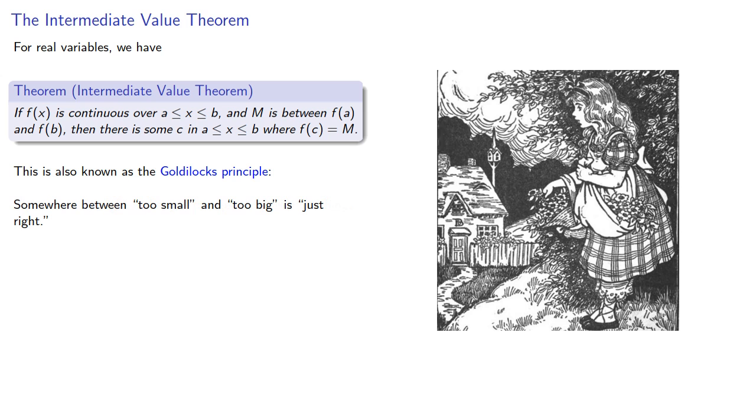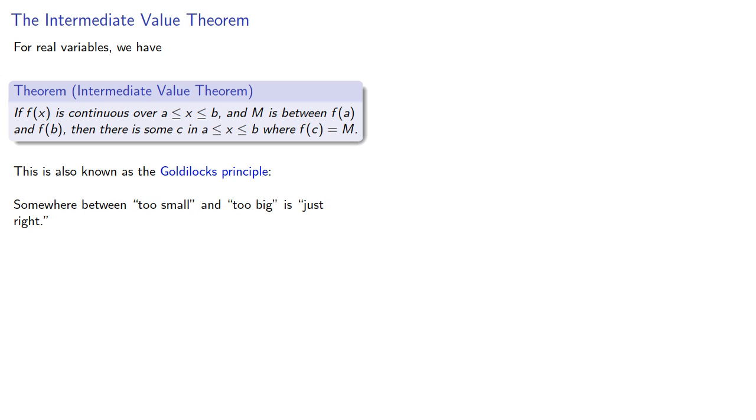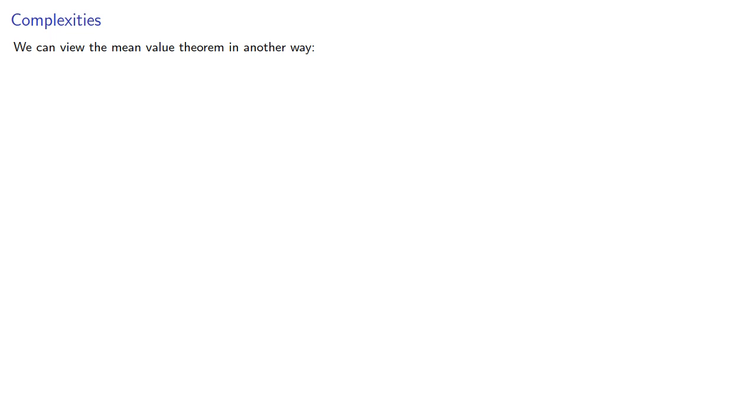This is also known as the Goldilocks Principle. Somewhere between too small and too big is just right. We can view the mean value theorem in another way.